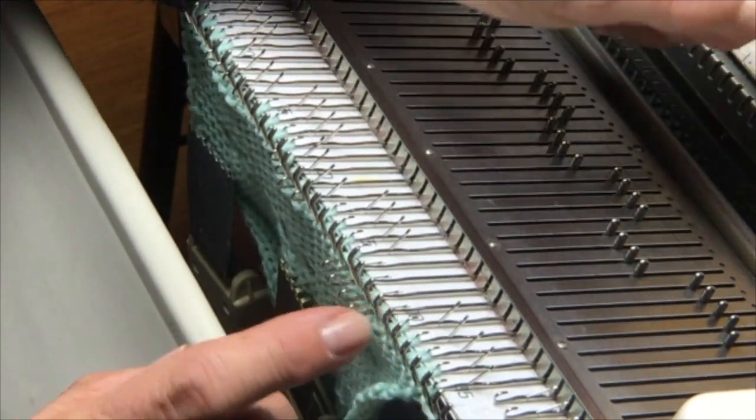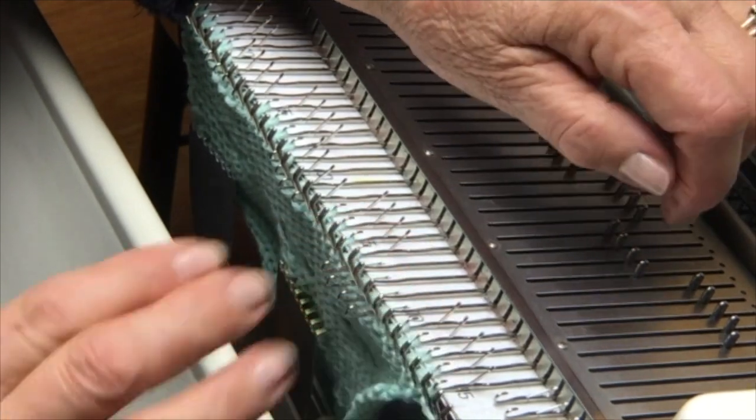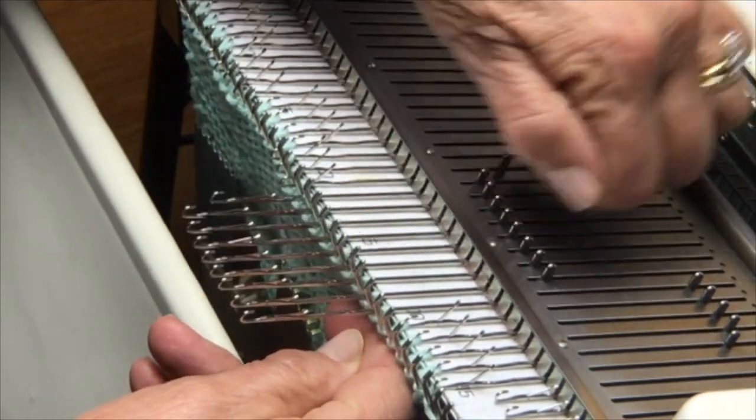So in this case for Chinese knot stitch, I'm going to hold everything except the first bridge on the carriage side.